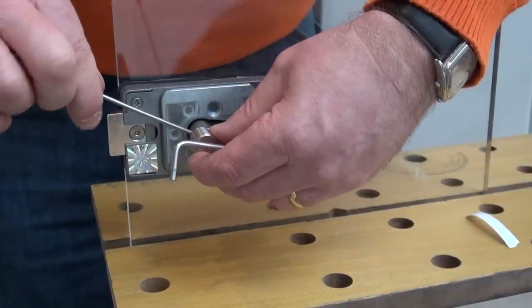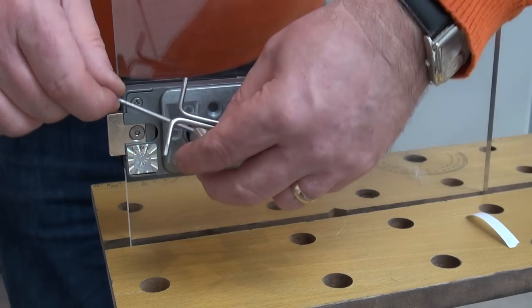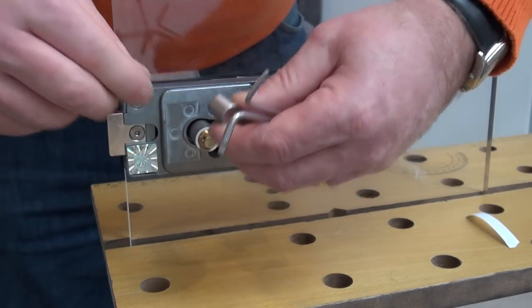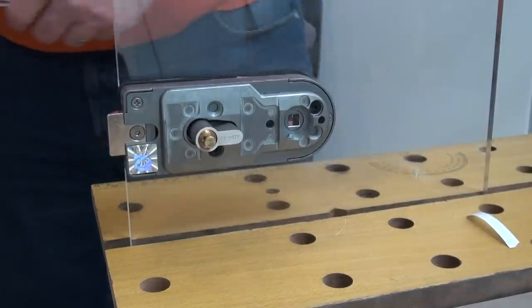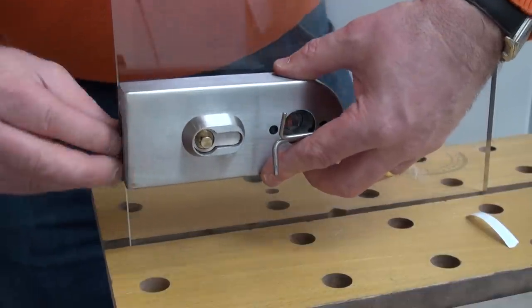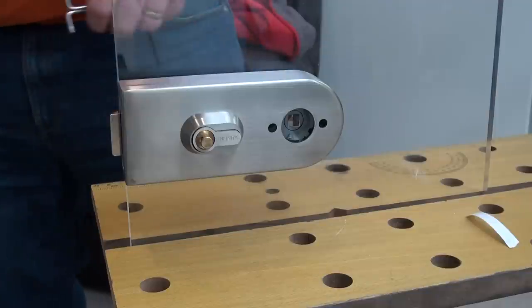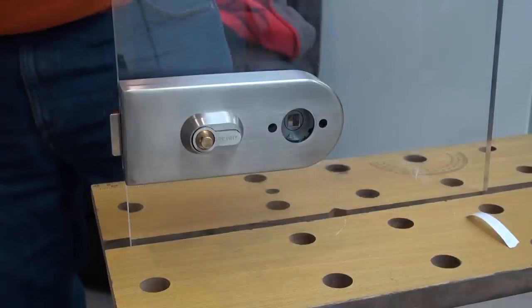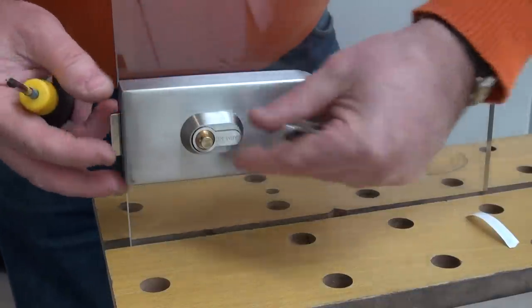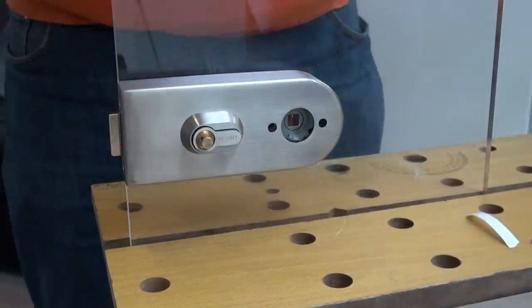And then take off the grub screw out of here, put that to one side and then get the face, the cover plate, by depressing the front, this will slide straight over. Put the two screws in, which holds the cover on. Before you do this, you may wish to tighten the cylinder up and you do that by tightening it underneath if you haven't already done so.